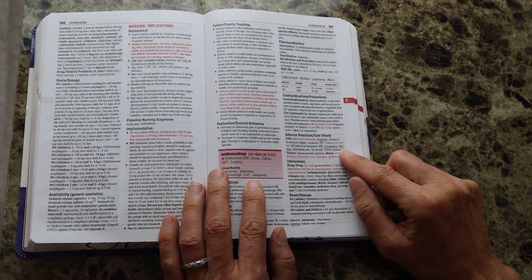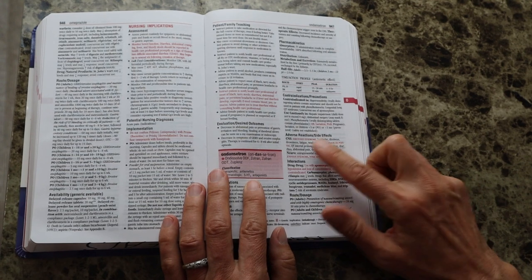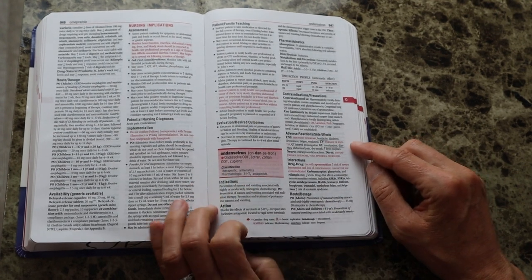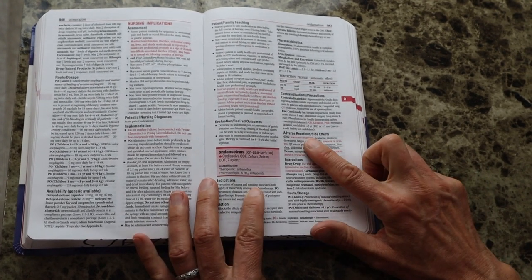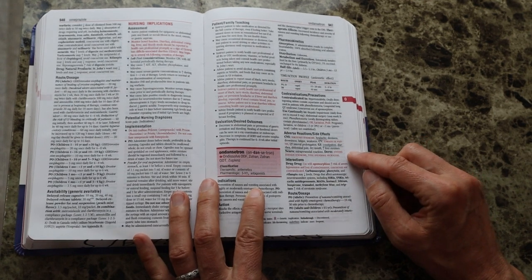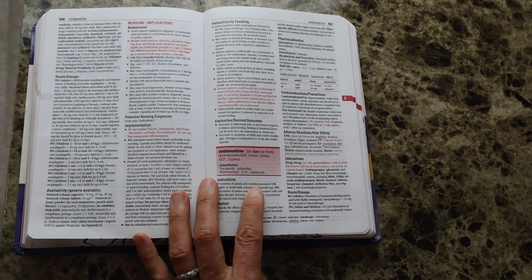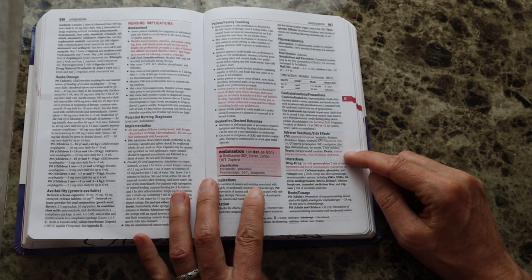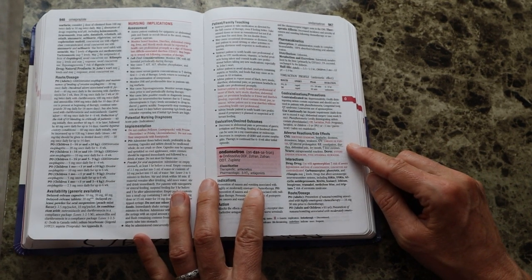The ones in red are the more life-threatening symptoms, such as serotonin syndrome, torsades de pointes, Stevens-Johnson syndrome, and toxic epidermal necrolysis. We want to make sure that we are aware of these side effects.